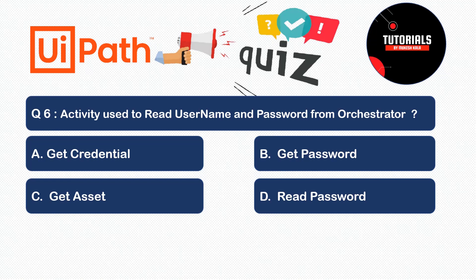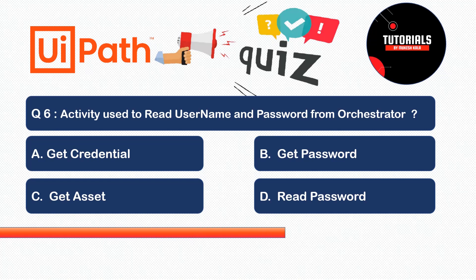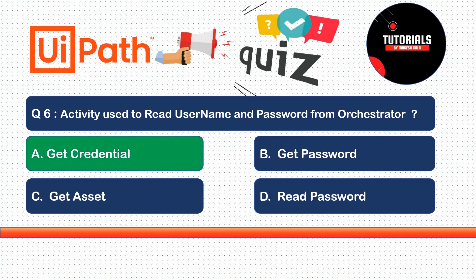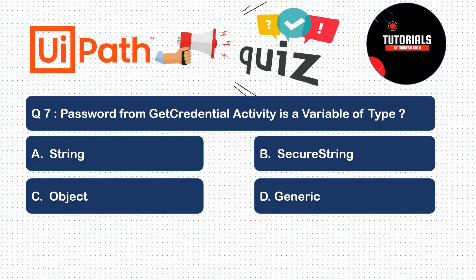Question 6: Which activity is used to read the username and password from the Orchestrator? As a best practice, credentials are stored in the Orchestrator, and I want to use them in Studio. Options: A) Get Credential, B) Get Password, C) Get Asset, or D) Read Password. The correct answer is Get Credential — you use this activity to get the username and password from the Orchestrator.